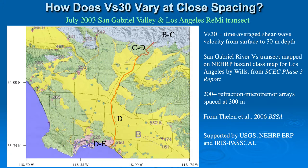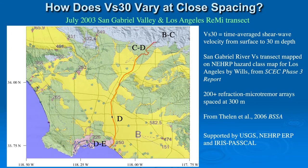West Allen published these in BSSA in 2006, supported by the USGS and Iris Pascal. The transect followed the route of the San Gabriel River from the mountains at the BC NEHRP boundary class, as mapped by Chris Wills, down through the CD boundary class and along the D boundary class into the DE boundary class in Alamitos Bay at Seal Beach.